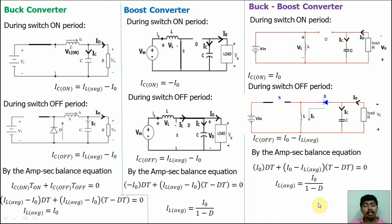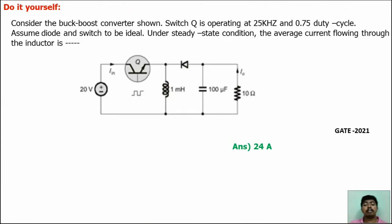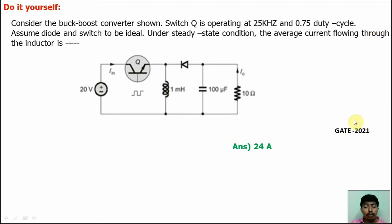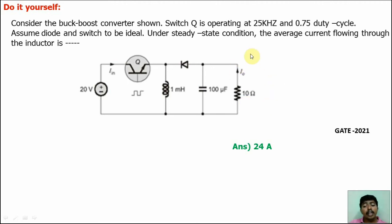Now do it yourself. This question is from the GATE 2021 examination — it is a buck-boost converter problem. Frequency is given; use T = 1/f to find T. The duty ratio D is given, so find T_on and T_off. We know the formula for average inductor current for the buck-boost converter: IL_average = I0 / (1 − D). First find the average output voltage V0, then find the average output current I0, and then calculate the average current flow through the inductor. The answer is 24 amps.